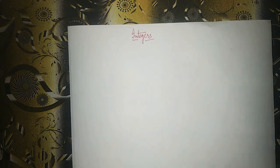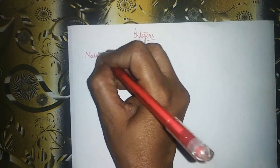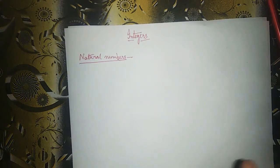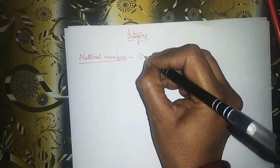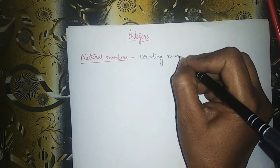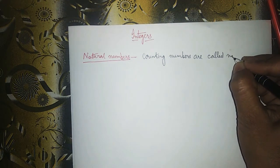First of all, I will tell you about natural numbers. All the counting numbers are called natural numbers: 1, 2, 3, 4, 5, 6, and so on. These all are natural numbers. So, counting numbers are called natural numbers.